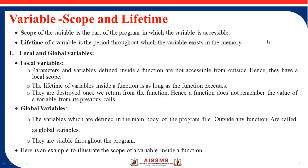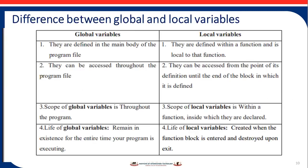Variable scope and lifetime: there are local variables, global variables, and static variables. The difference between global and local variables is as follows. Global variables are defined in the main body of the program, while local variables are defined within a function and are local to that function. Global variables can be accessed throughout the program file, whereas local variables can be accessed from the point of definition until the end of the block in which they are defined. The scope of a global variable is throughout the program, but a local variable's scope is within the function where it is declared. The lifetime of a global variable remains for the entire time the program is executed, while a local variable is created when the function block is entered and destroyed upon exit.